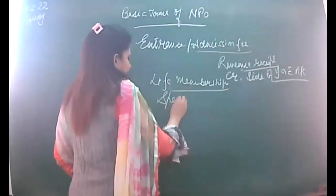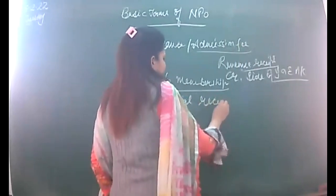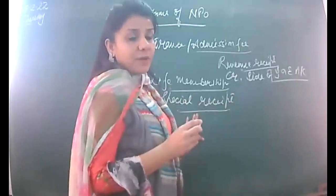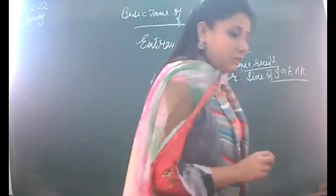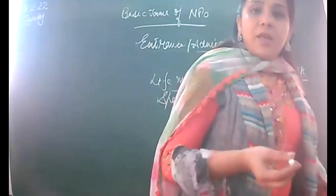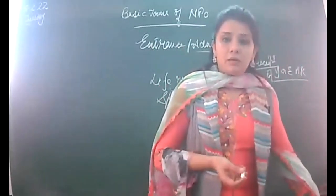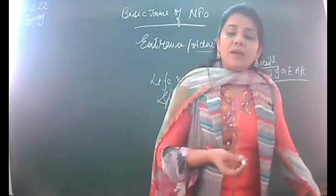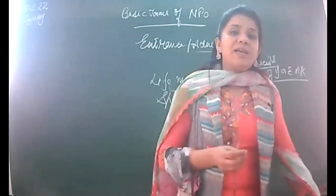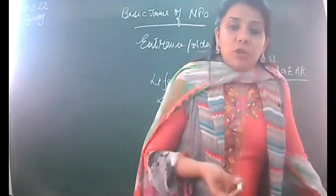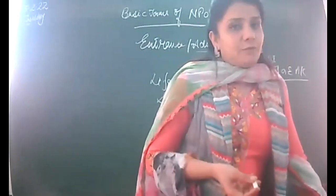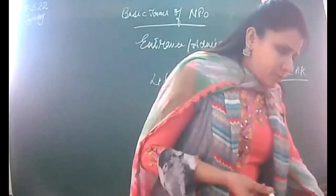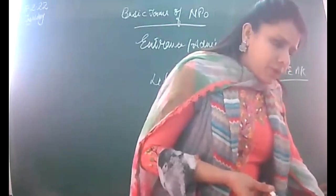Next we have special receipt. This type of receipt is collected for some specific purpose, and we are liable to utilize it for that purpose only. For example, contributions for the annual dinner—like on the eve of New Year or Diwali—are collected from members and must be utilized for the purpose for which they were collected. That is why it is a capital receipt.